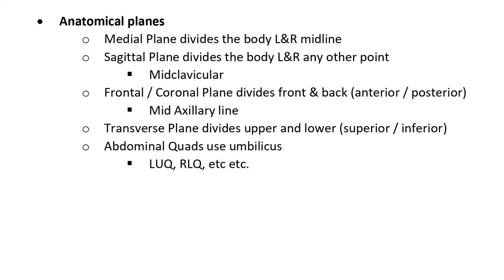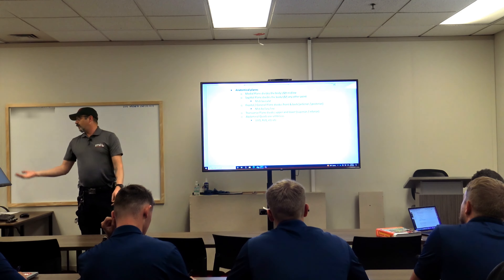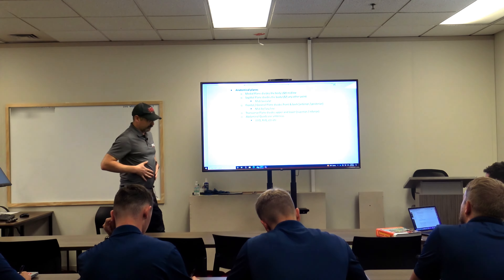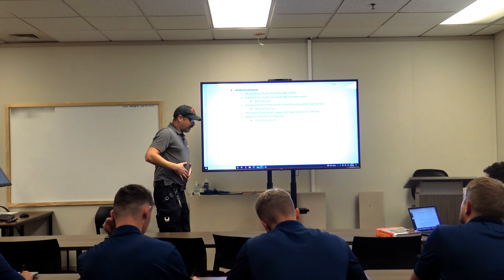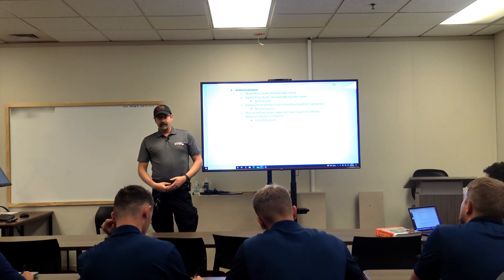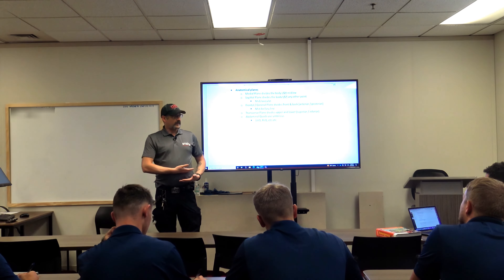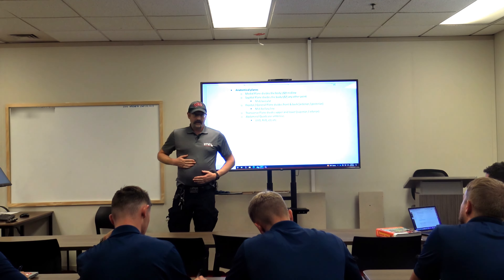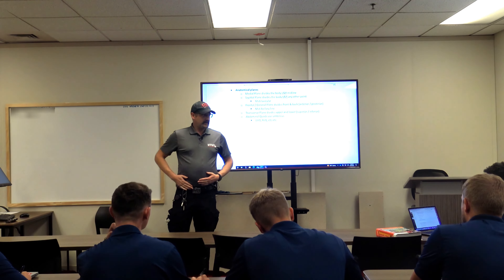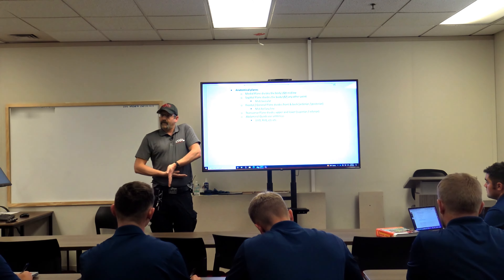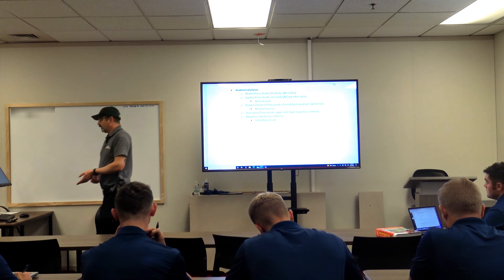A good way to think about this: we divide the abdomen into four sections using the medial plane and a transverse line across the umbilicus — your belly button. That gives us right upper, right lower, left upper, and left lower quadrants, like a little target right on my belly button.